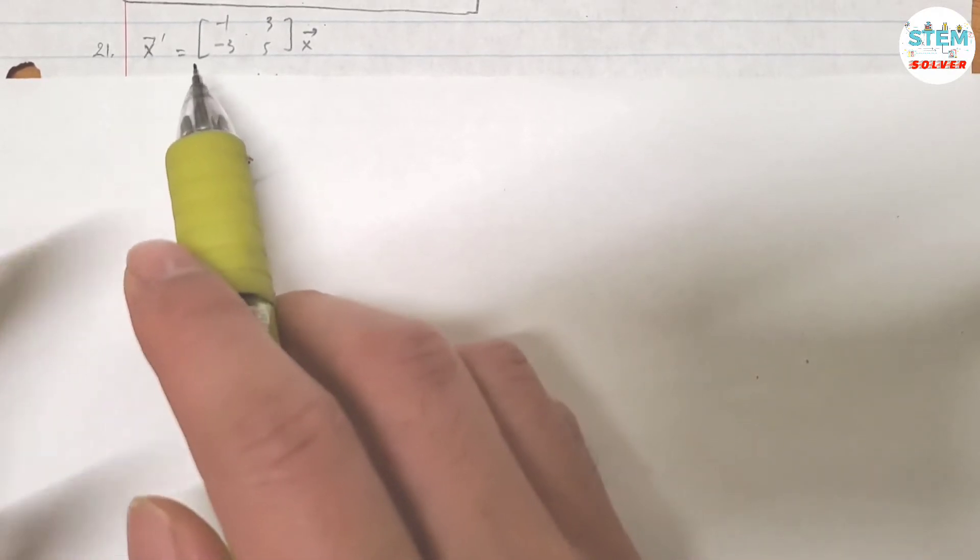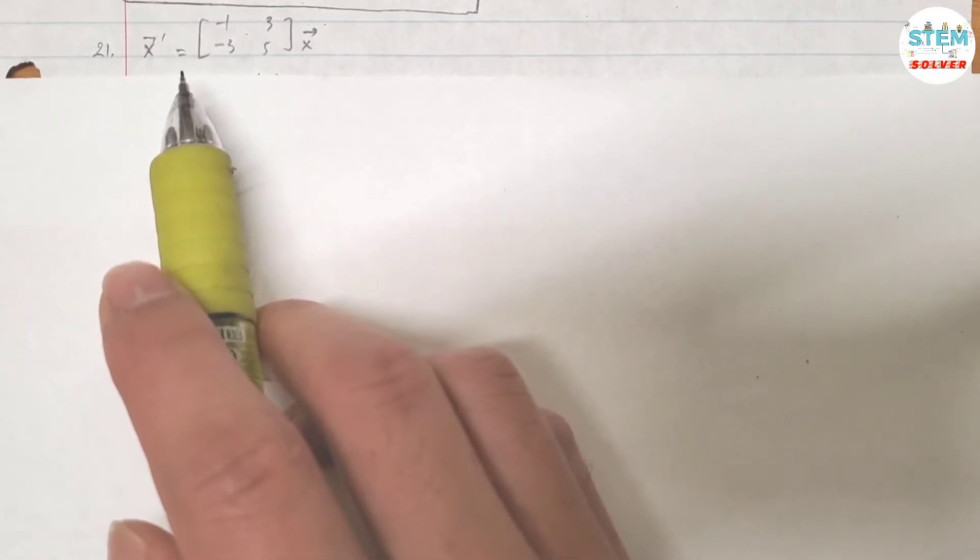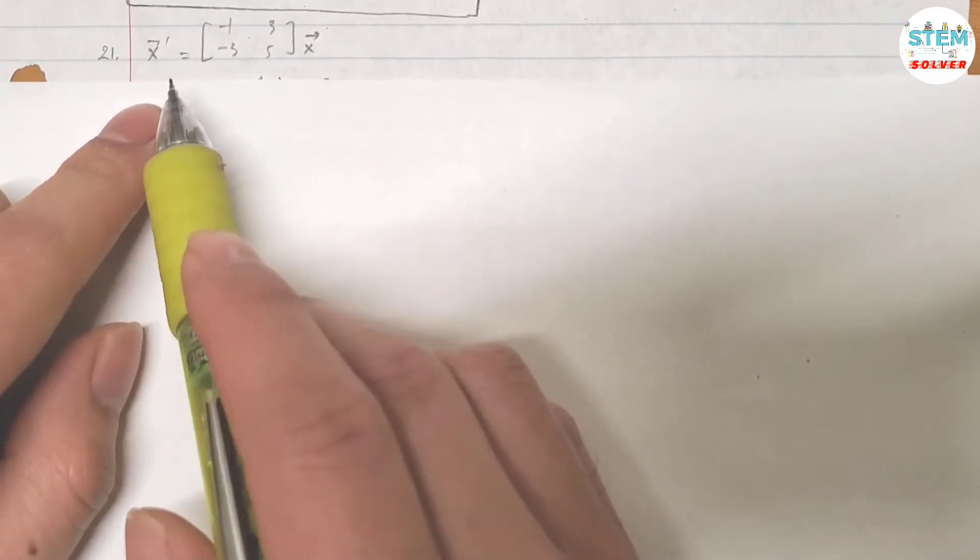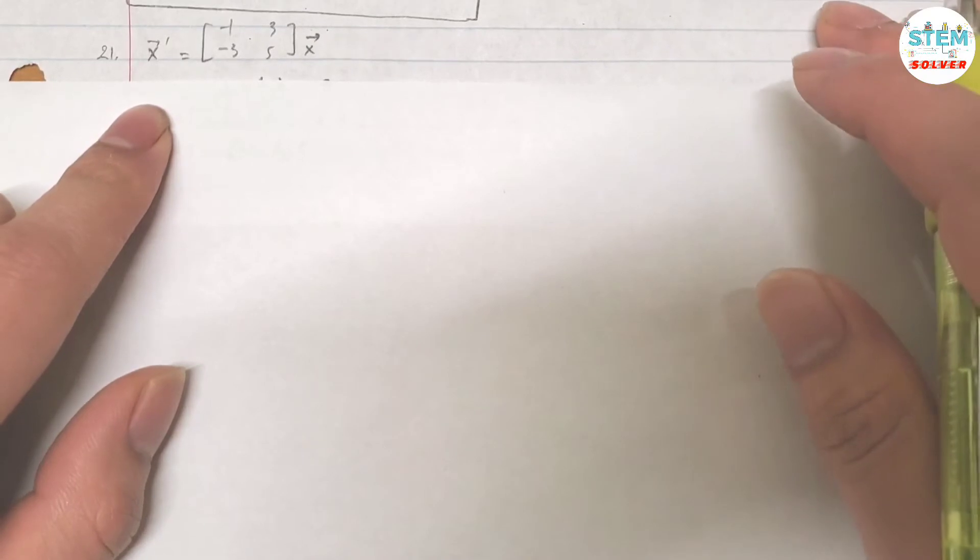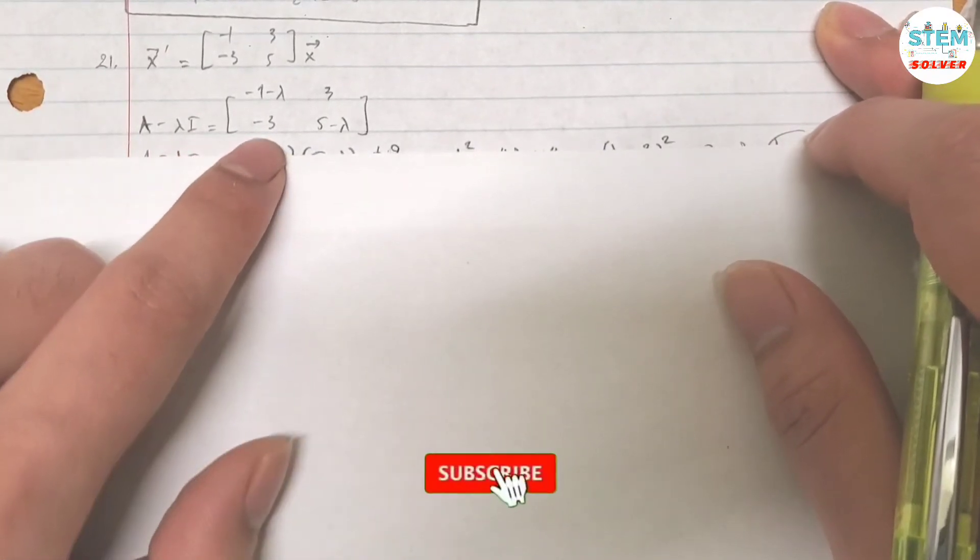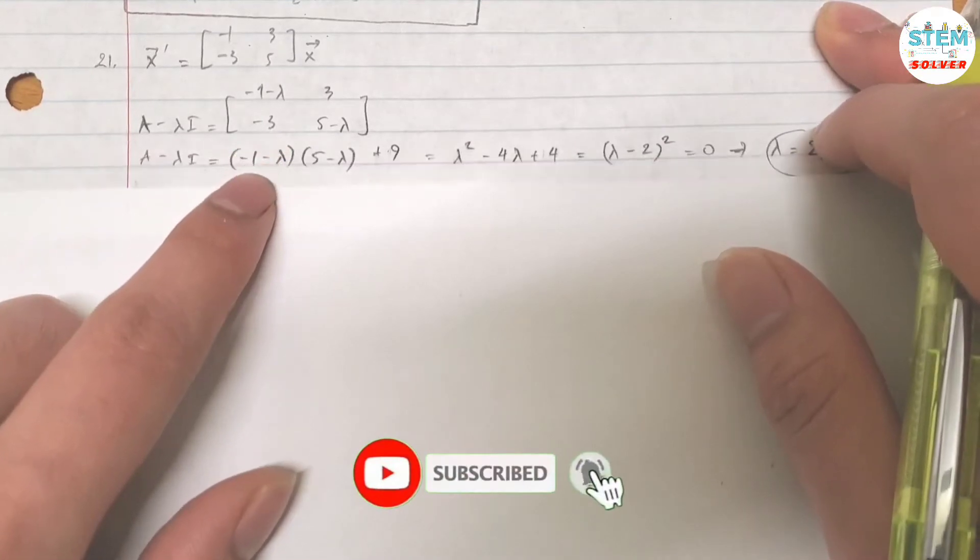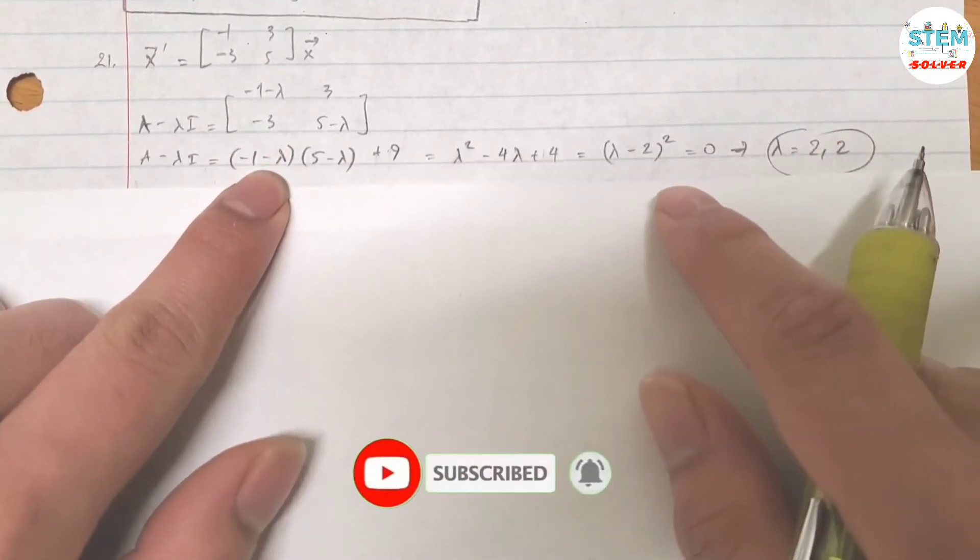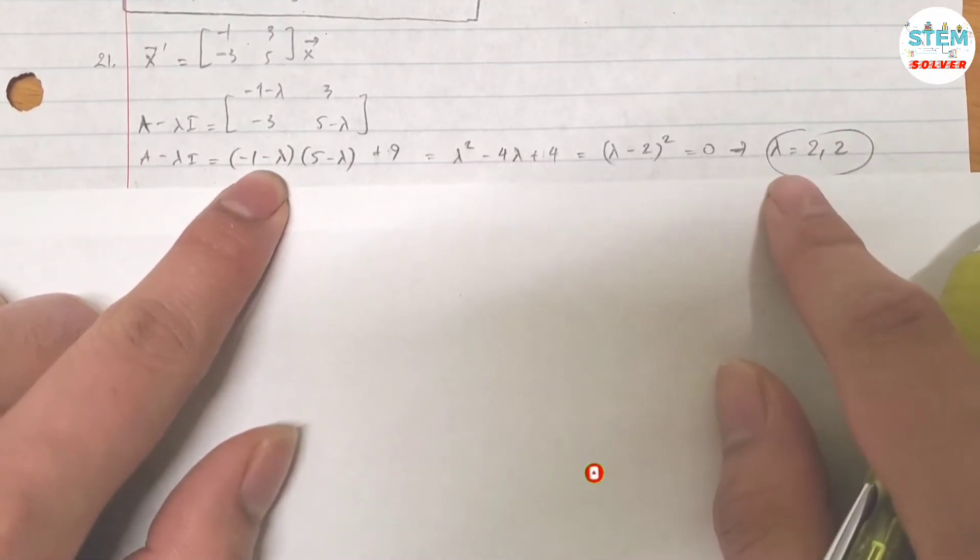The general solution of the given system: here's your given system in terms of vector x prime. First, you need to find A minus lambda I. That gives you this matrix. Then find the determinant of it and set that determinant equal to zero. For lambda, I got lambda equals 2.